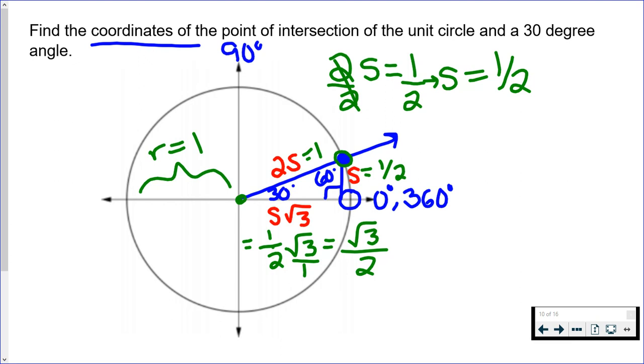Remember, this is zero zero in the middle. If I trace the base of this triangle, I've gone over to the right square root of three over two. If I trace the height of this triangle, I'm going up one half. By doing that, I arrive at the ordered pair.